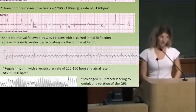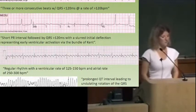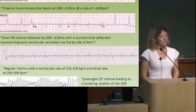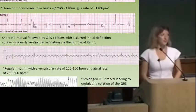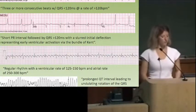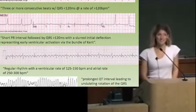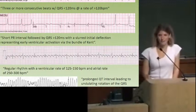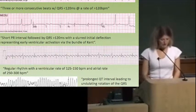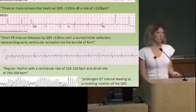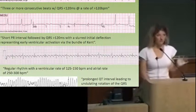The third EKG is atrial flutter — see the sawtooth? They might describe it as regular rhythm with a ventricular rate between 125 and 150, and an atrial rate about twice that — 250 to 300. So that's a 2:1 ratio between atrial and ventricular rate. How do we treat aflutter? If the patient's unstable, shock them. Anytime they have an arrhythmia and are unstable, cardiovert. If they're medically stable, beta blockers and digoxin have a role — similar treatment to rate control for atrial fibrillation.